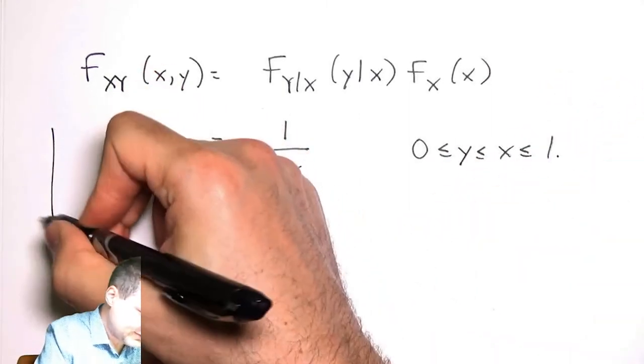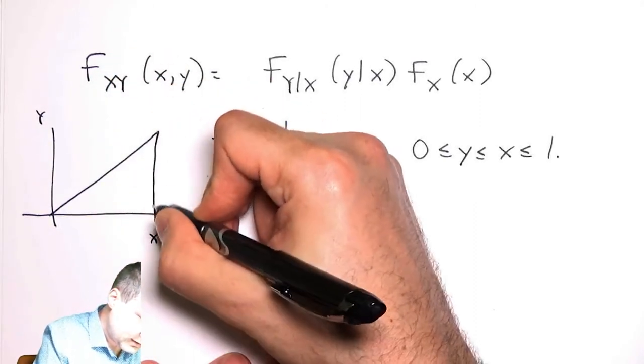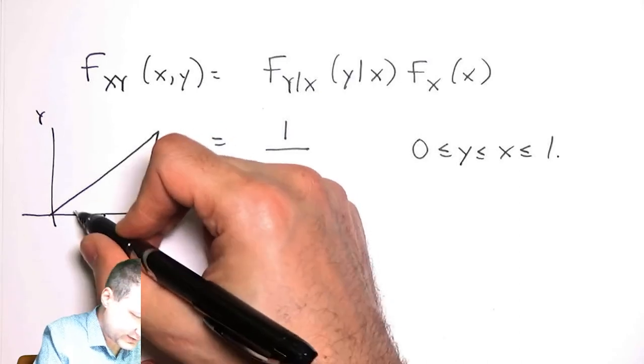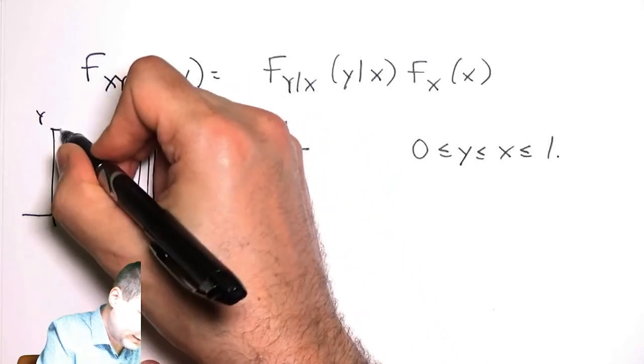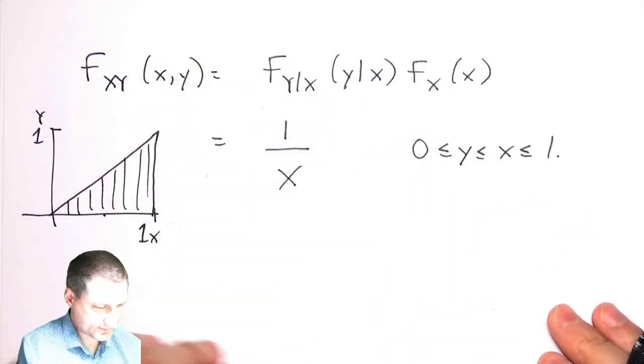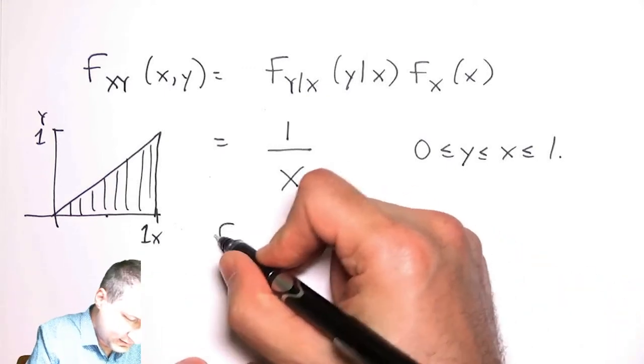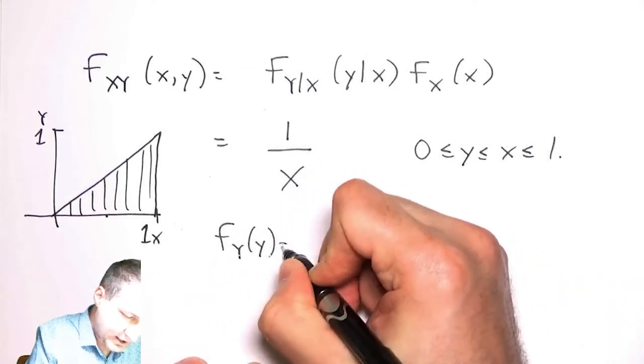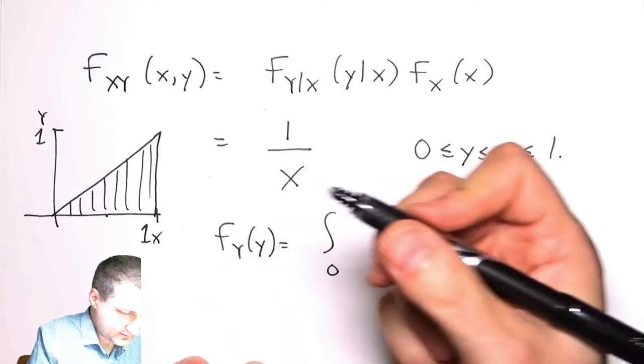That means that I can choose X to be anything and then Y has to be between zero and whatever that value is, so I'm really looking at this part of the plane, like this triangle.